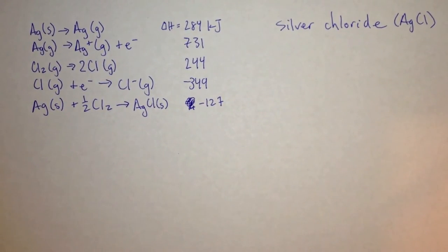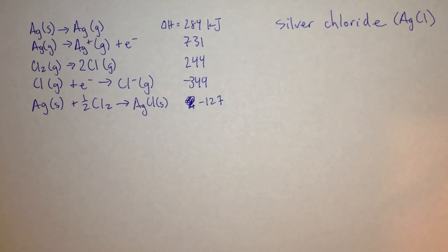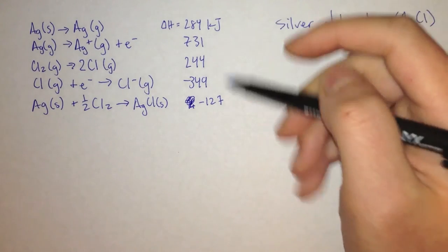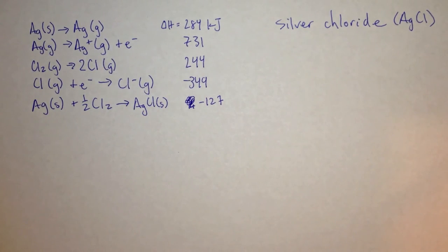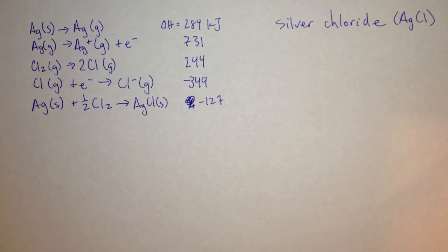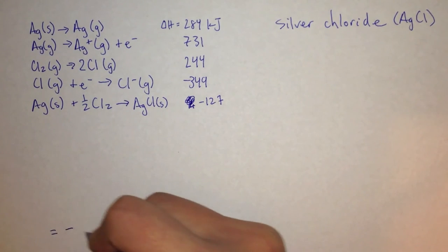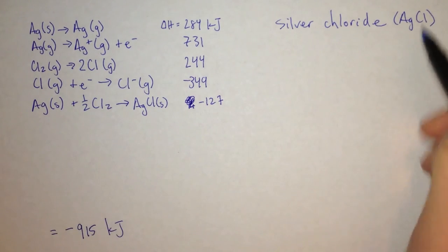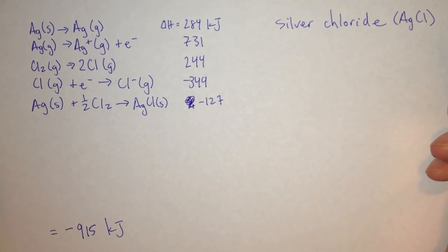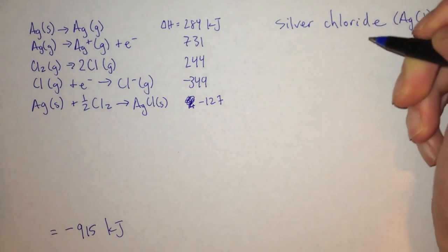Now let's look at the last problem. Here's another problem for solving the lattice energy — this time for silver chloride. On the left we have given values for the heat of some reactions. If you press pause now, you can solve it, then hit play again to check your answer. The correct answer is negative 915 kilojoules for the lattice energy of silver chloride. Let's take a look at how we got there.